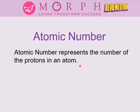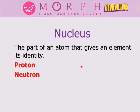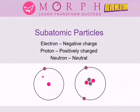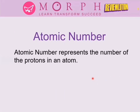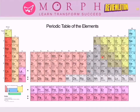Copper has atomic number 29, which means it has 29 protons. For copper to be neutral, it must have 29 electrons to cancel the 29 protons. You can see this in the periodic table which contains all information about discovered elements. No matter how much the number of neutrons or electrons changes, as long as the number of protons doesn't change, the element remains the same.